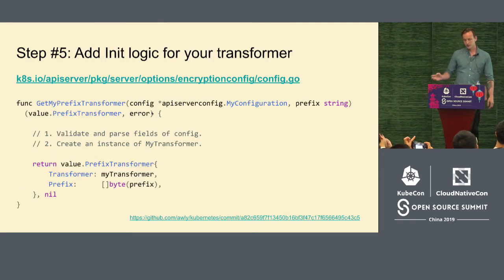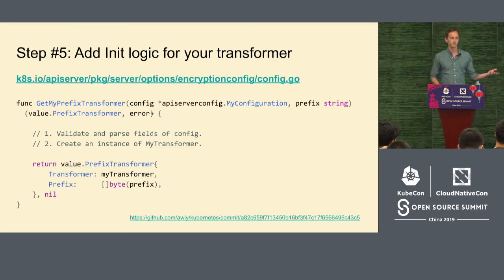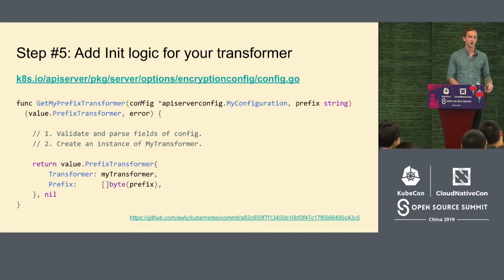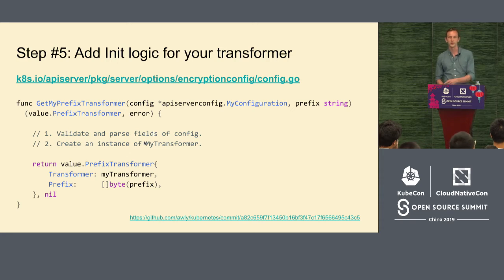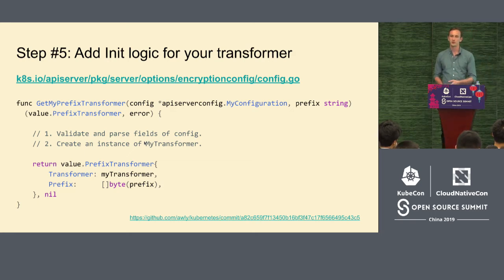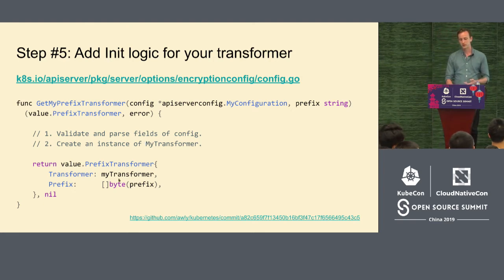You don't need to implement prefix transformer yourself — it's already implemented. You just need to instantiate it and give it a prefix and your actual transformer. You register your prefix in a const block in the linked file, alongside prefixes for all other transformers that already exist in Kubernetes. Last step: you create a new function that takes your configuration and prefix as input, validates the configuration, instantiates your transformer implementation, and wraps it with the prefix transformer.